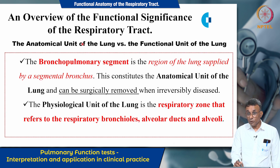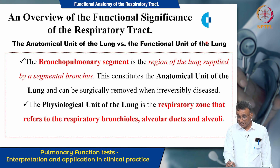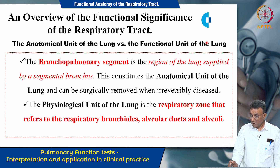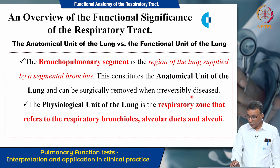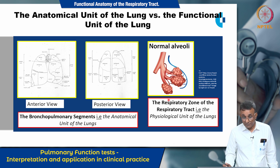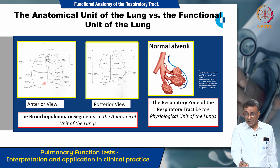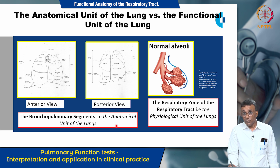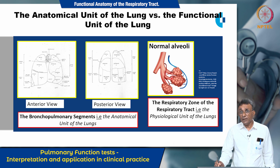This slide compares the anatomical unit and the functional unit of the lung. The bronchopulmonary segment is a region of the lung supplied by a segmental bronchus; it constitutes the anatomical unit and can be surgically removed when irreversibly diseased. The physiological unit of the lung is the respiratory zone, comprising the respiratory bronchioles, alveolar ducts, and alveoli. The slide shows anterior and posterior views of the lungs, with each lung divided into segments according to its segmental bronchus supply.